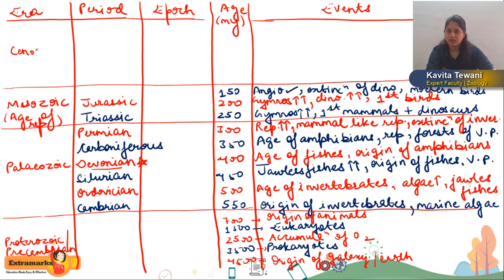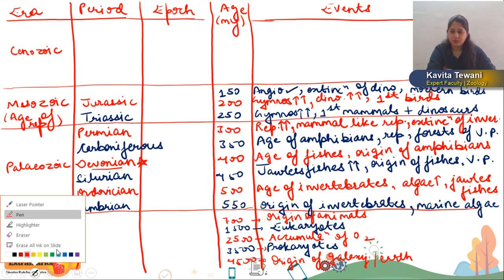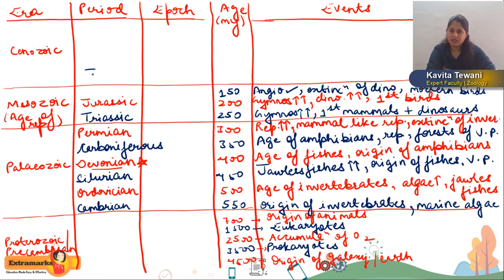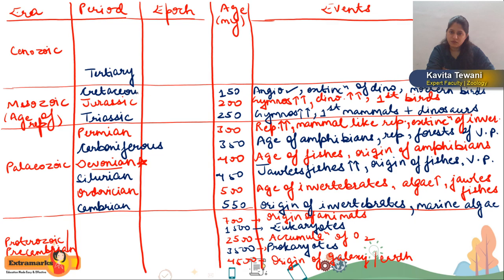The last and most recent era is the Cenozoic era, which is ongoing. It is divided into two periods: Tertiary and Quaternary. Tertiary is divided into epochs: Paleocene, Eocene, Oligocene, Miocene, and Pliocene. Approximate ages used: 65, 55, 45, 35, 25 million years.